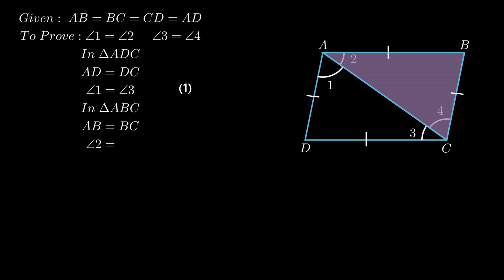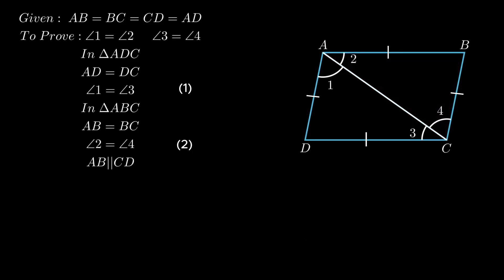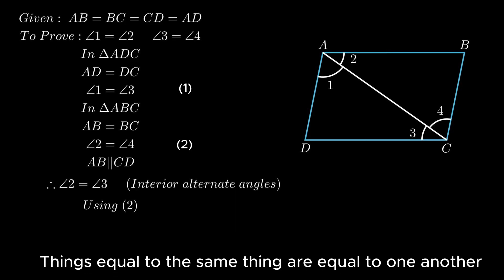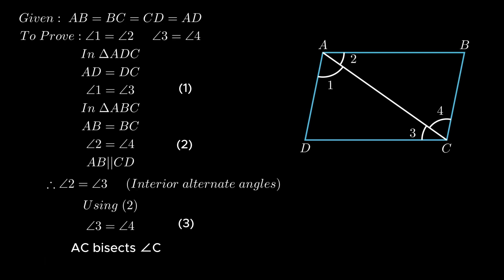Since AB is parallel to CD as opposite sides of a rhombus are parallel, angle 2 = angle 3 as interior alternate angles. Using equation 2 (angle 2 = angle 4), by the axiom we conclude angle 3 = angle 4. Hence diagonal AC bisects angle C. Similarly using equations 1 and 3, angle 1 = angle 2. Hence diagonal AC bisects angle A.